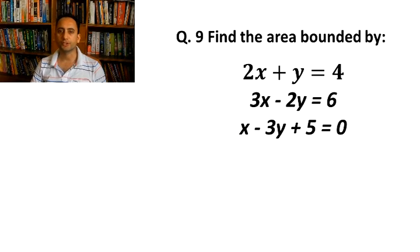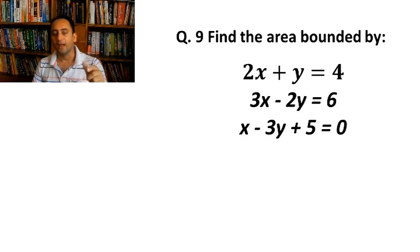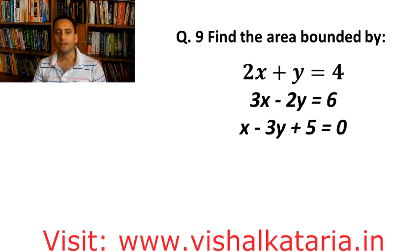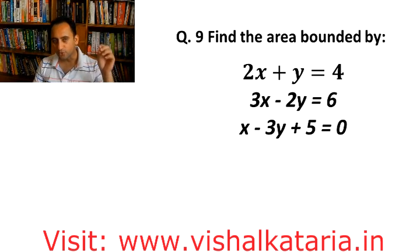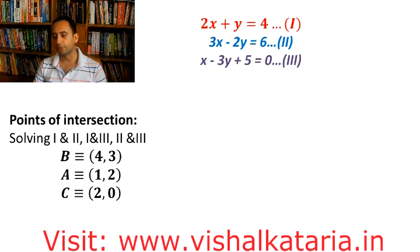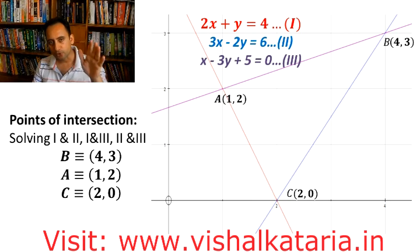The last question is almost similar to the previous one. The only difference is that in question 9, equations of lines are given and we find the points of intersection by solving these equations, whereas in the previous question the points of intersection were given and the line equations were found using two-point form. Let's solve all three equations — taking two at a time (first and second, first and third, second and third) to get all three vertices. The points of intersection are: B = (4, 3), A = (1, 2), and C = (2, 0).